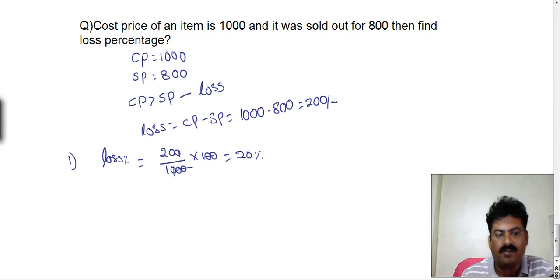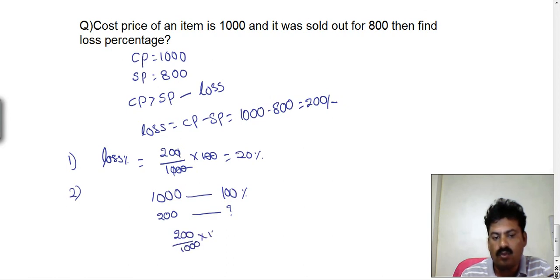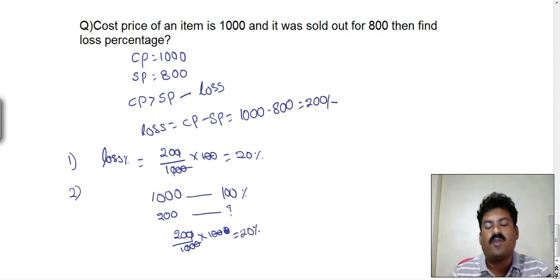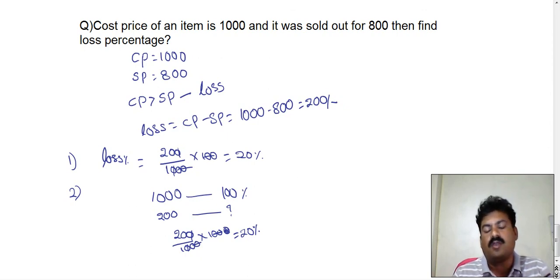Using the second mechanism: 1000 is the 100% investment. The total loss is 200. We calculate 200 divided by 1000 into 100, which equals 20% loss. Like this, we can calculate profit percentage or loss percentage when both cost price and selling price are given, and then determine the gain percentage or loss percentage accordingly.